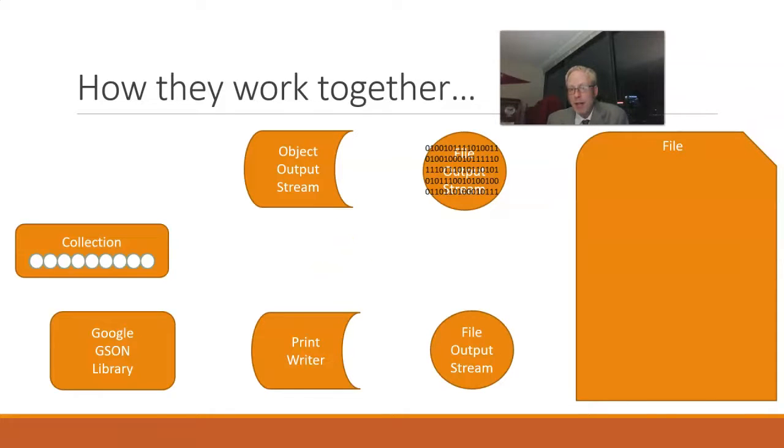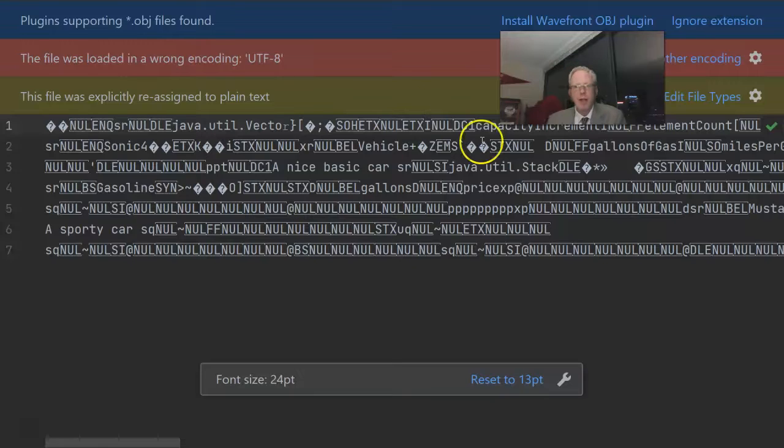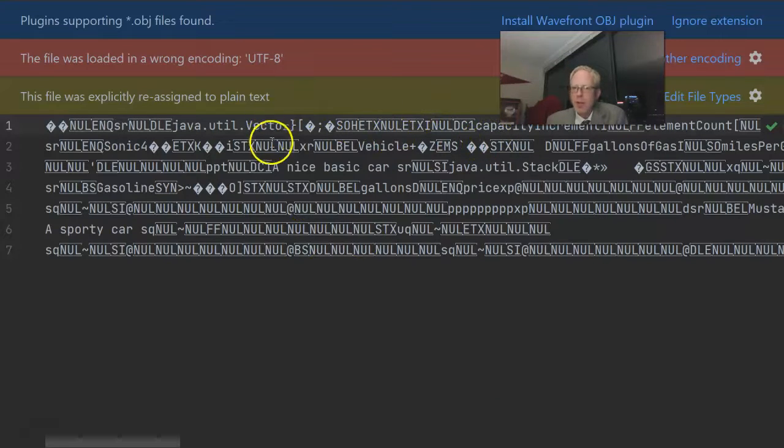Which can represent a file on disk. So the file output stream takes these zeros and ones and writes them to a file. Now those are not necessarily going to be human readable. Look at a file generated by a file output stream using vehicle objects, and you can see some words that you understand, but a whole lot of things that just don't make sense or are not human readable.